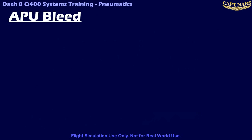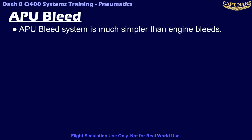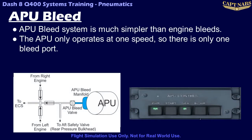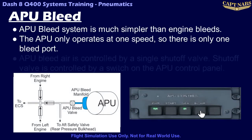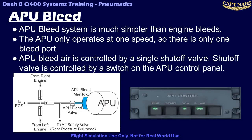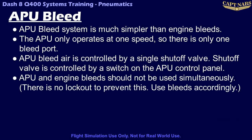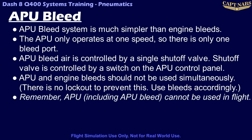The APU bleed system is much simpler than the engine system, as the APU only operates at one speed. A single bleed port in the APU feeds the bleed system through an APU bleed shutoff valve. This valve is controlled by the APU bleed switch on the APU control panel. There is no lockout to prevent the bleed system from being supplied from multiple sources. However, the air conditioning system is only designed to receive bleed air from a single source, either the engines or the APU. Both sources should not be used simultaneously, as this may cause too much pressure for the air conditioning system. Also, remember that the APU cannot be used in flight, therefore you cannot depend on the APU as a source of bleed air in flight. Once the aircraft takes off, the APU will automatically shut down as the wheels leave the ground.